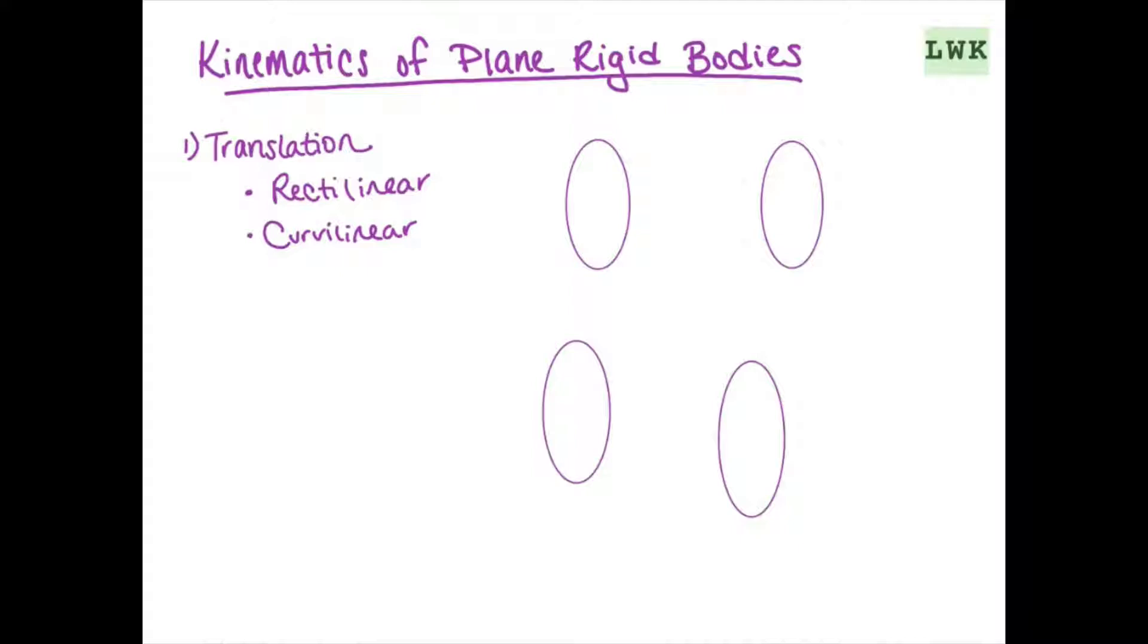So first let's define different types of motion that we're going to be covering. Number one is going to be translation. There are two types of translation: rectilinear and curvilinear.